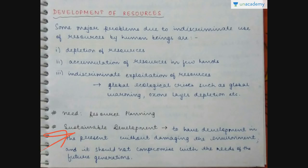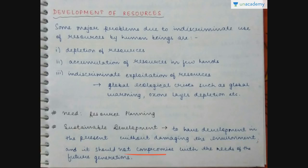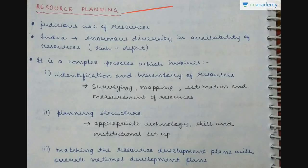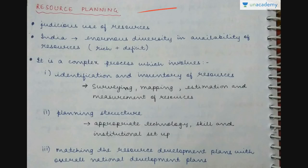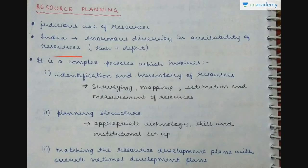There is a concept of sustainable development. When we consider development of resources in the present without damaging the environment, and without compromising the needs of future generations — that is sustainable development. We are considering both the present and the future. Resource planning is about the judicious use of resources, because in India we have enormous diversity in the availability of resources — some areas are rich in certain resources while others are in deficit.